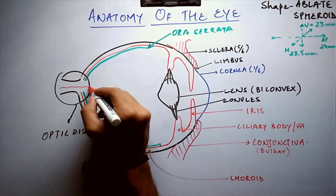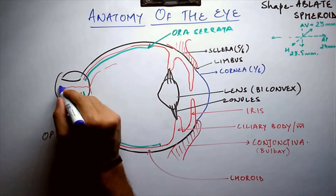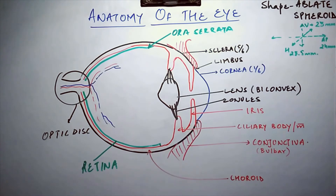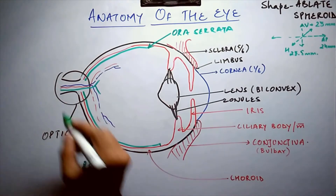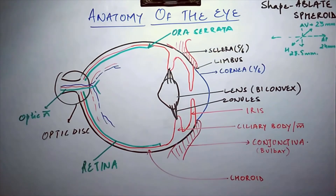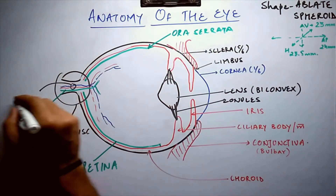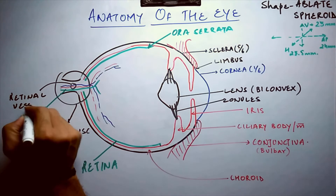The retinal artery, shown in red, and the retinal vein, shown in blue, enter and leave the eyeball from the optic disc. The optic nerve also enters from the optic disc. The retinal artery and retinal vein together are termed the retinal vessels.